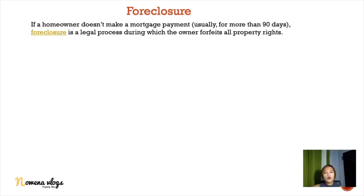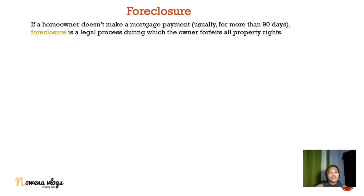Foreclosure — if a homeowner doesn't make a mortgage payment for usually more than 90 days, foreclosure is a legal process during which the owner forfeits all their property rights. Banks typically allow only three months of delayed monthly amortization before the property can be forfeited or foreclosed.